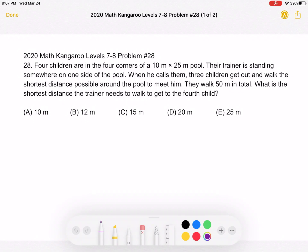This is the 2020 Math Kangaroo level 7-8 problem number 28. Four children are in the four corners of a 10 meter by 25 meter pool. Their trainer is standing somewhere on one side of the pool. When he calls them, three children get out and walk the shortest distance possible around the pool to meet him. They walk 50 meters in total. What is the shortest distance the trainer needs to walk to get to the fourth child?